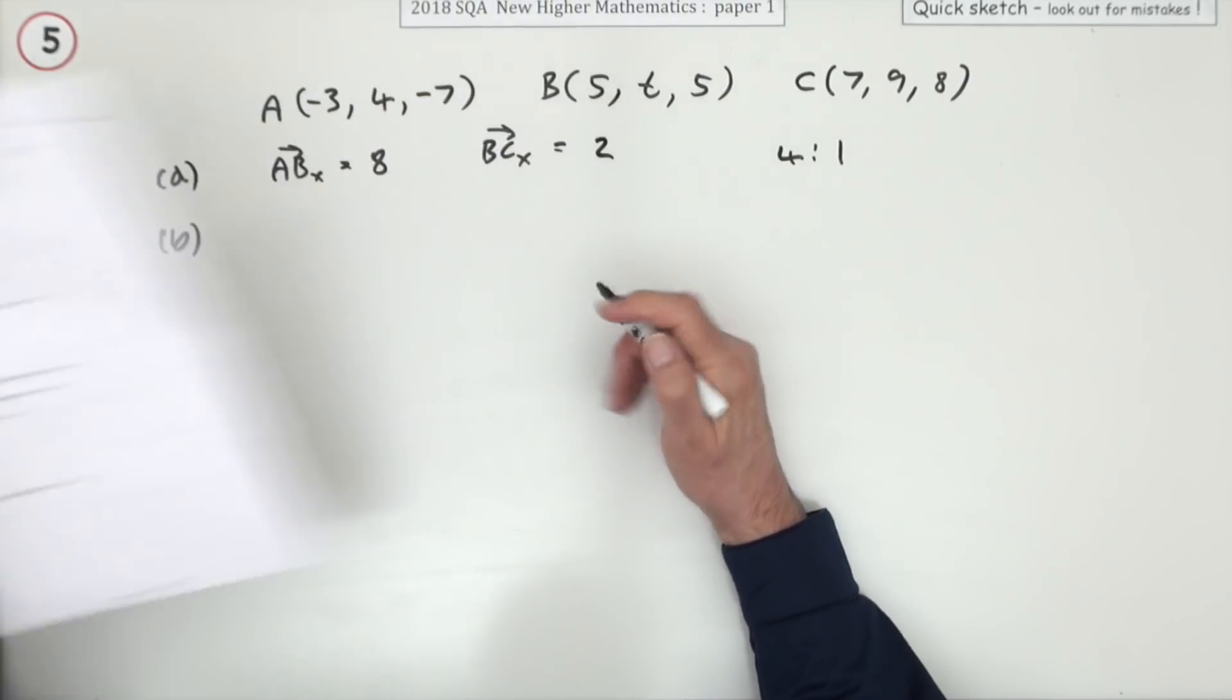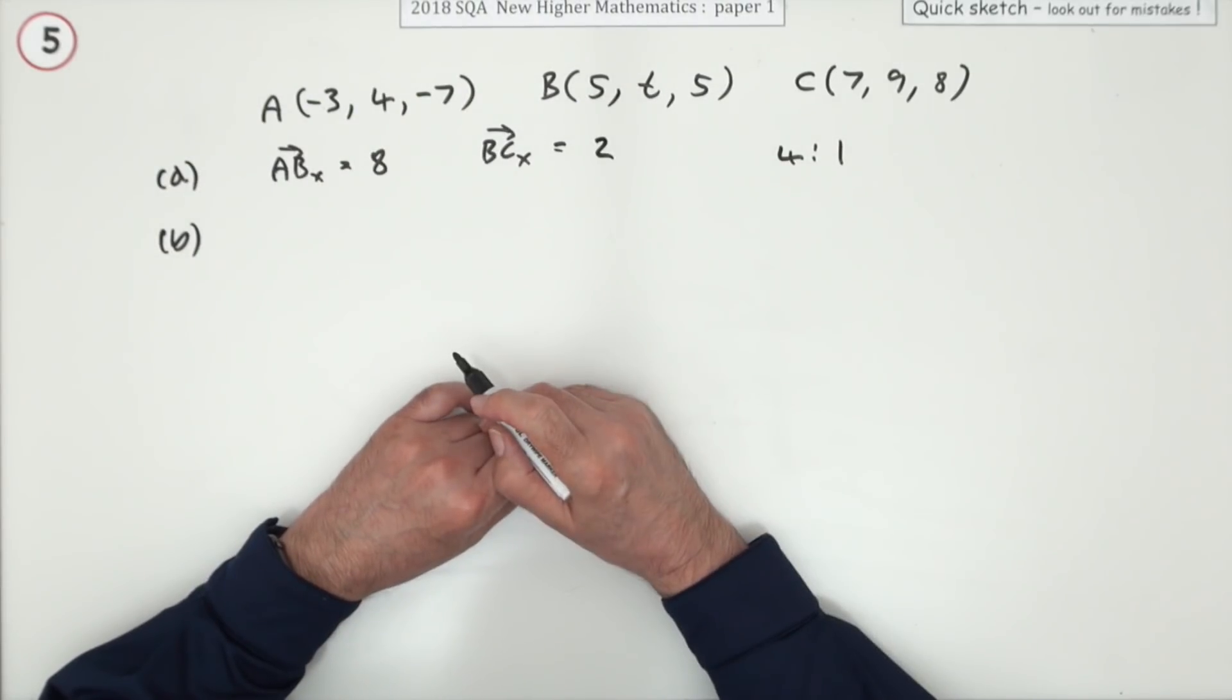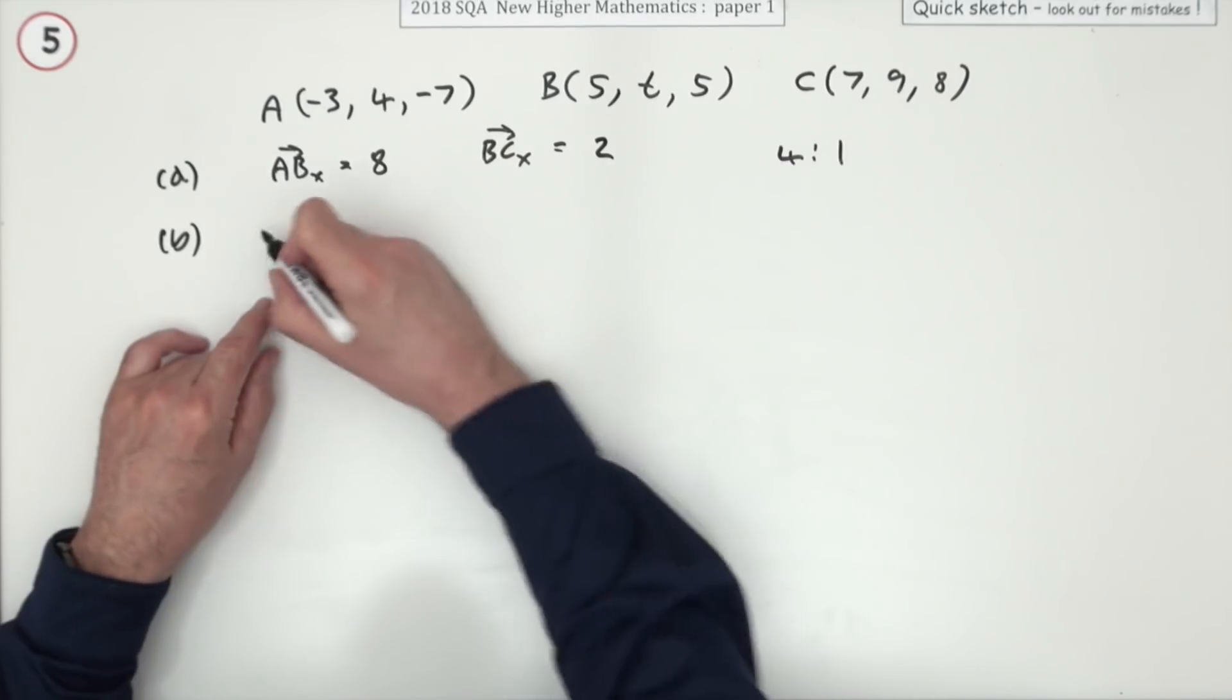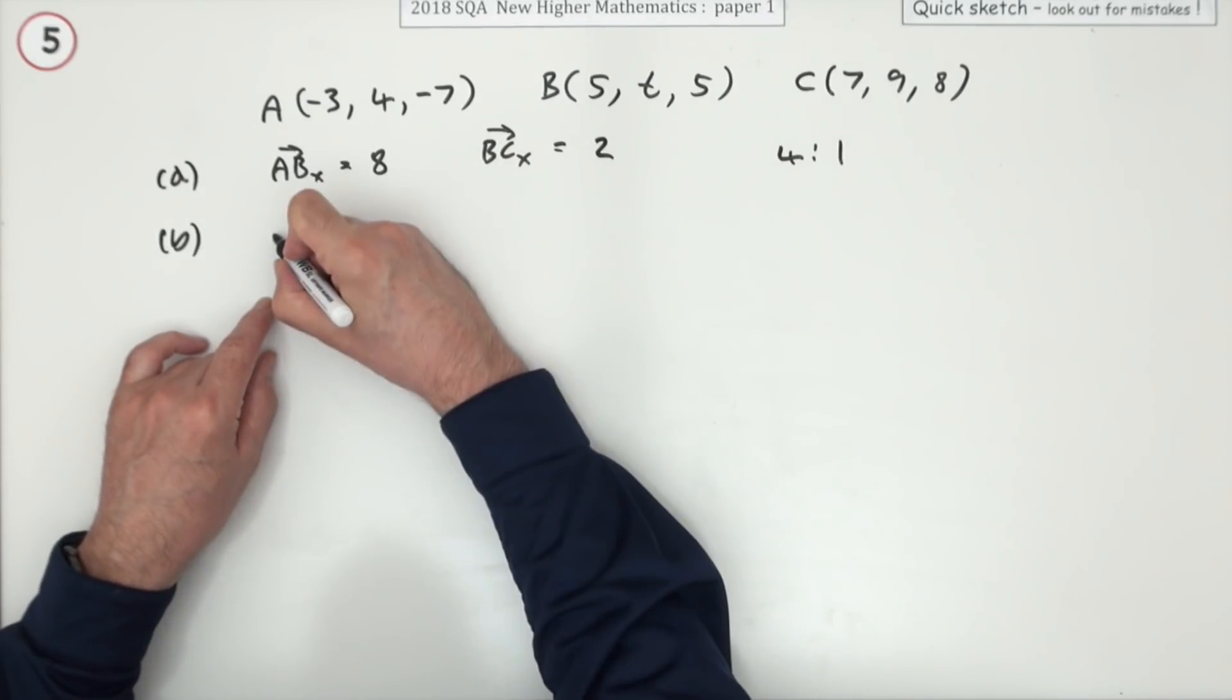Part B says: what's the value of t, now that you know the ratio is four to one? Well, t's in the y-coordinate place. I'll do this.